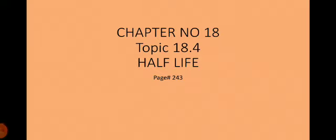Dear students, this is our fourth lecture of online class in which we will discuss topic 18.4 from chapter number 18, the half-life. As we have discussed in our last lectures: the atom and the atomic nucleus, and the second topic is radioactivity — how the radioactive element spontaneously releases subatomic particles or gamma rays by unstable atoms to make themselves stable. We also discussed the experiments showing how radioactive elements emit radiations: alpha, beta, and gamma.